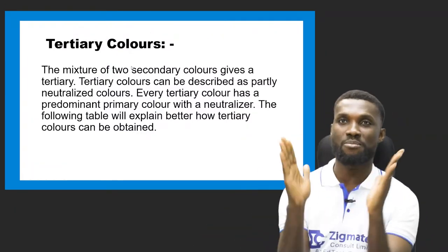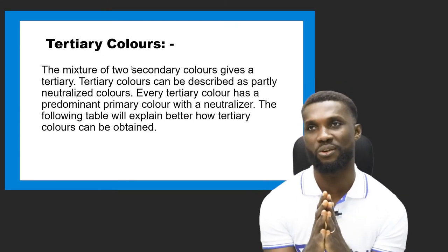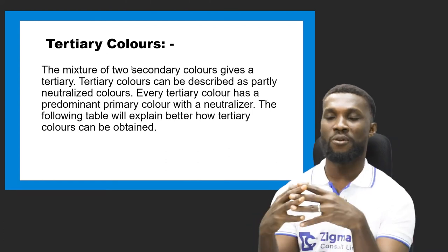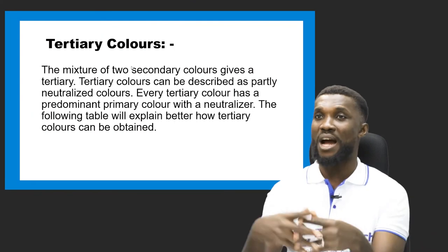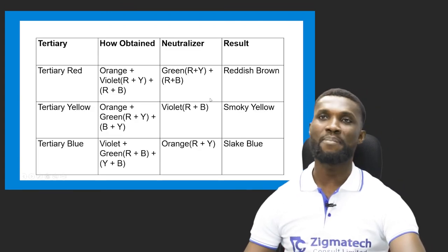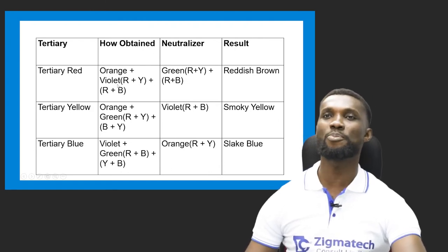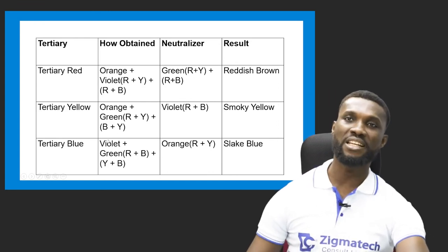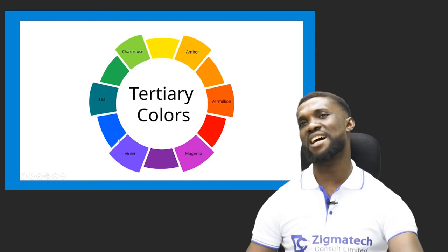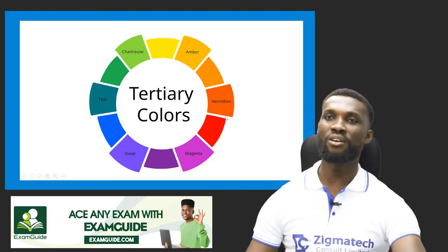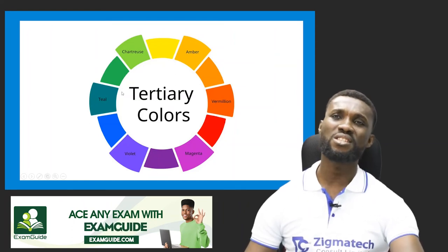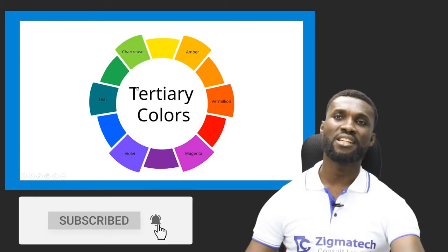Now let's look at the tertiary color. The mixture of two secondary colors gives you a tertiary color. The first color will actually neutralize the second color. Just know that if you bring two secondary colors and mix them together you get a tertiary color. For example: orange plus violet gives you reddish brown; orange plus green gives you smoky yellow. In tertiary colors you start getting strange names like ochre, vanilla, magenta, and teal, to mention a few.